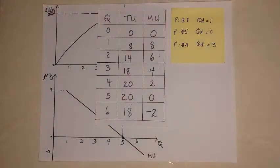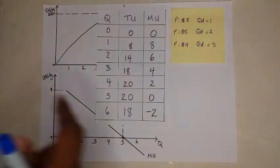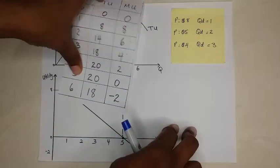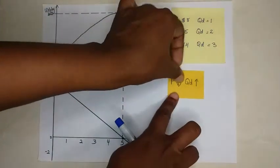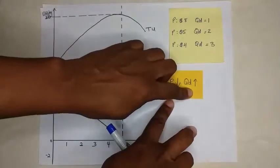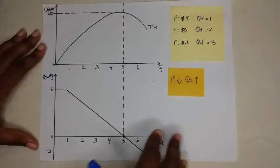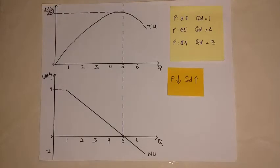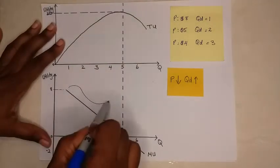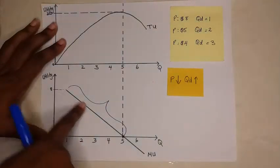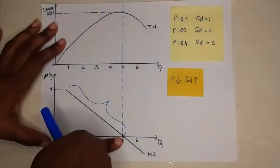What does this remind you of? Does this look like the law of demand? Yes, this is the law of demand. And so you see, this is how we derive the demand curve. Because when price decreases, quantity demanded increases. What you would find is that your demand curve is actually the positive portion of your MU curve. This is how we derive the demand curve.